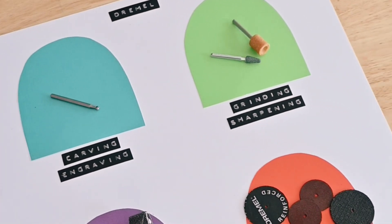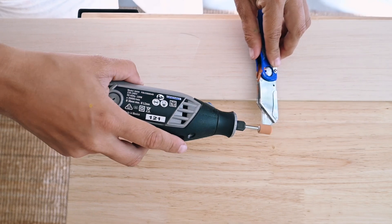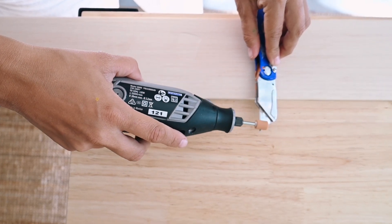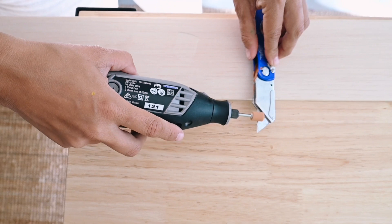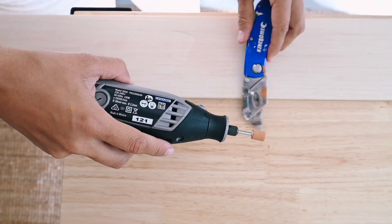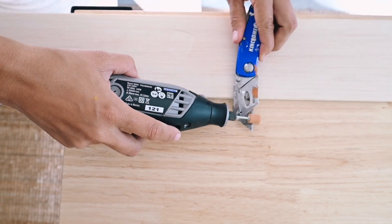Your Dremel is also fantastic for grinding and sharpening, so it comes with a couple of grinding and sharpening accessories that can be used to sharpen knives or any sorts of blades.